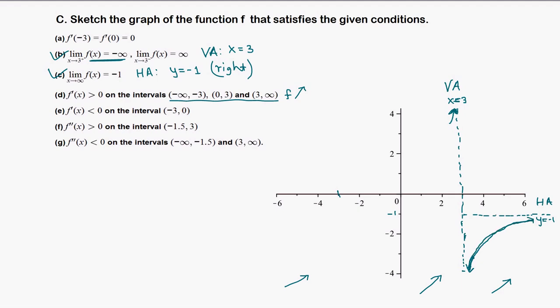Because we have two asymptotes — a horizontal asymptote and a vertical asymptote — and the function is increasing, the graph must have a specific shape. We can confirm this: on the interval (3, ∞) the graph should be concave down, since the second derivative is negative there. Second derivative negative means concave down.